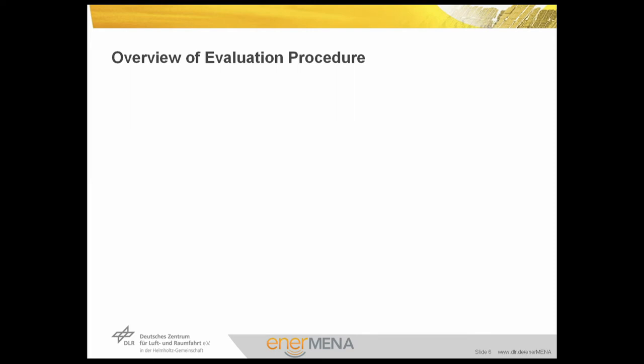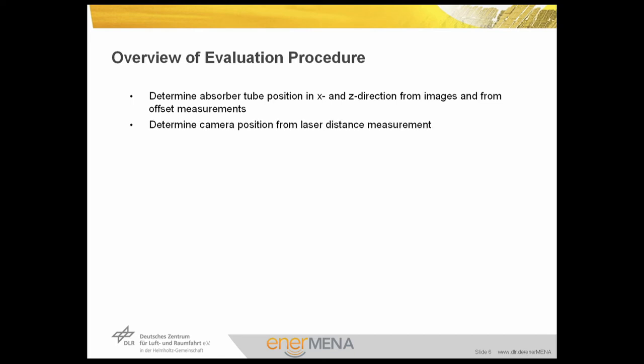Let's have an overview of the evaluation procedure. From the documentation images, we have to determine the absorber tube position and its deviation in x and z direction from the focal line. For this evaluation, we use the documentation images and the offset measurements using the hook. We also have to determine the camera position from the laser distance measurement. All these values are put into a configuration file, which is then used by the evaluation macro.